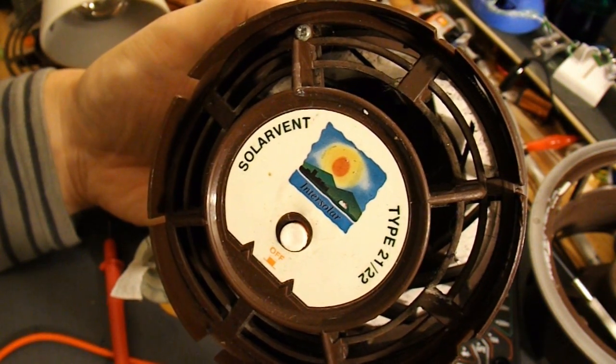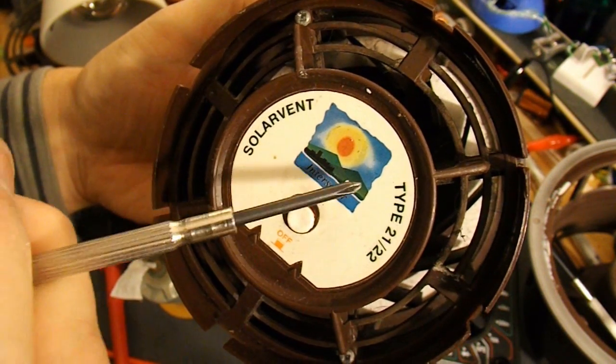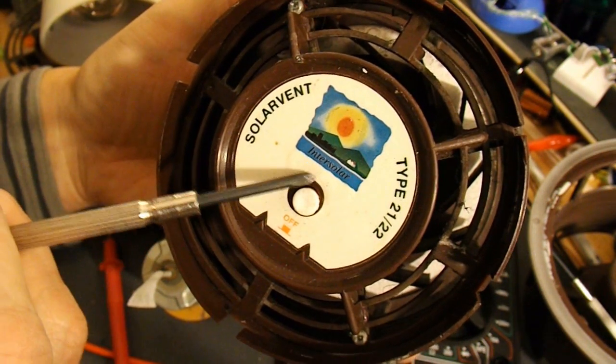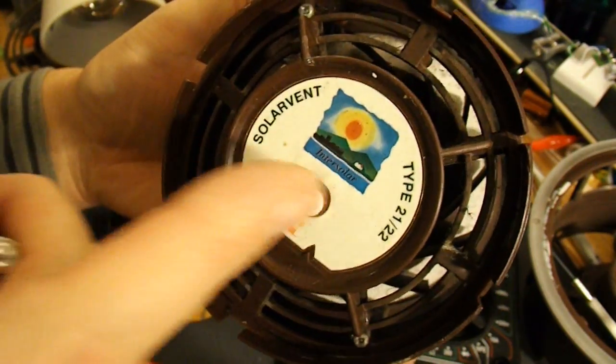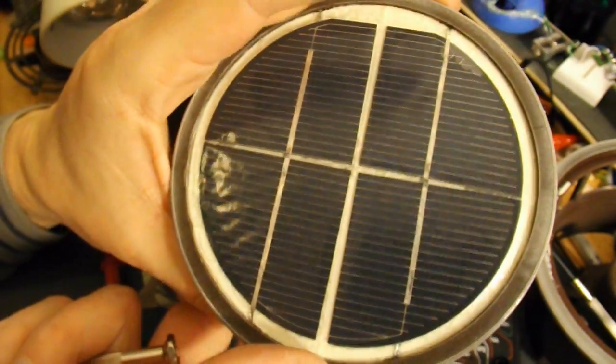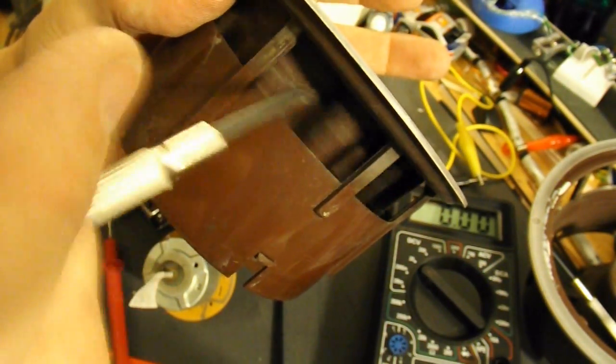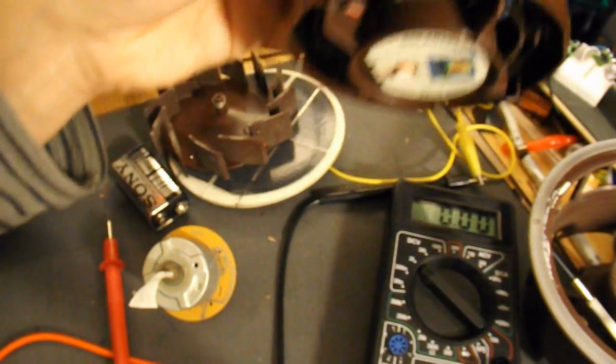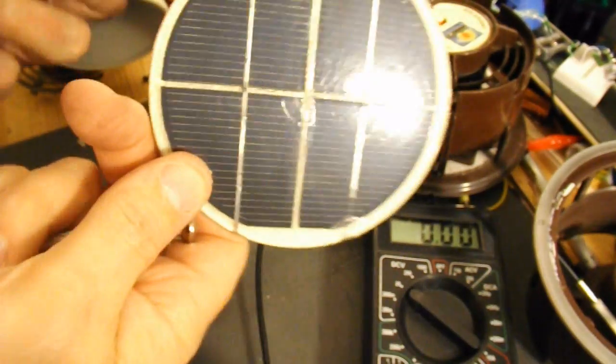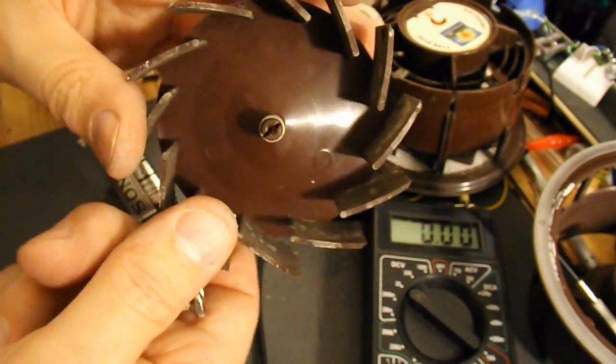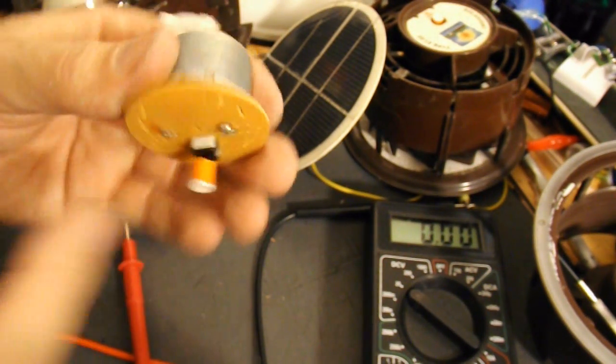Just a little close-up for summary. This was a solar vent, type 21-22, and that says inter-solar on there. On-off switch, solar panel, fan blade, and an electric motor. Or separated out, solar panel, fan blade, electric motor, on-off switch.